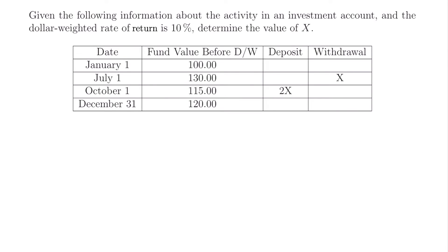Here's our second example. Given the following information about activity in an investment account where the dollar-weighted rate of return is 10%, determine the value of x. We have a table with dates throughout the year, the balance of the fund on each date, and when deposits and withdrawals are made. The column labeled 'fund value before d/w' shows the fund balance before a deposit or withdrawal — but we won't need the middle values from this column for our calculation.